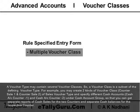For example, you may create two kinds of voucher class — Counter Sale 1 and Counter Sale 2 — of sales voucher type, and specify different cash accounts, such as Cash Account at Counter 1 and Cash Account at Counter 2 under the cash account group, so that you can get separate reports of cash sales for the two counters and separate cash balances for the respective counter.